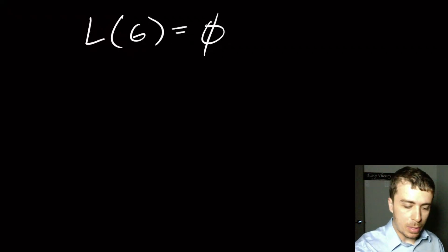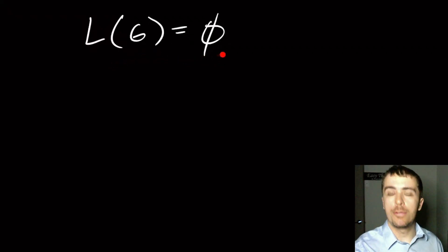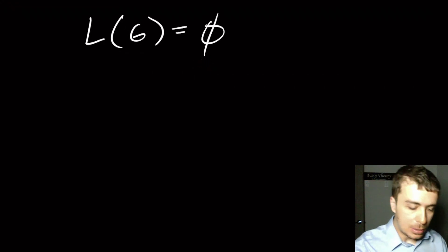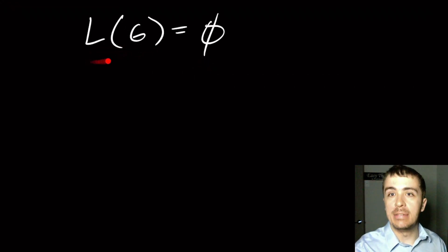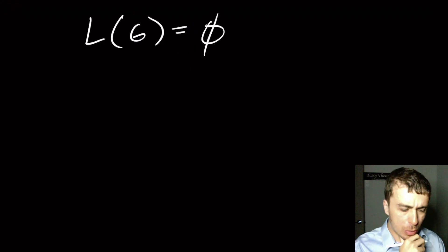Hi, so I wanted to make a really quick context-free grammar for the empty set. This denotes the set of strings that this particular grammar G generates, and we want it to have the empty set. So how can we actually do that?